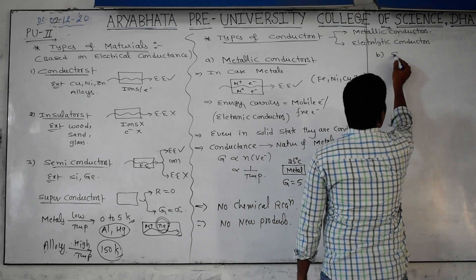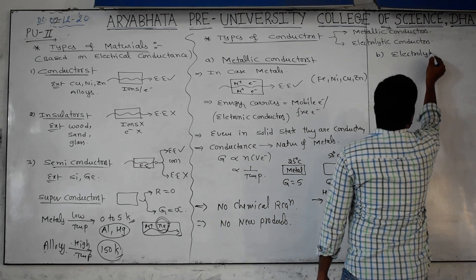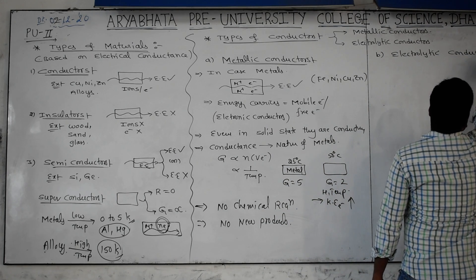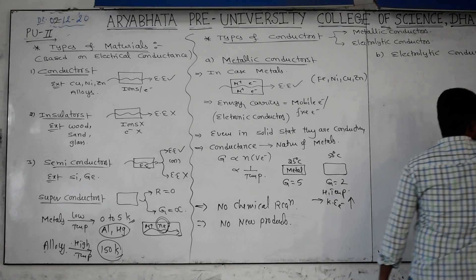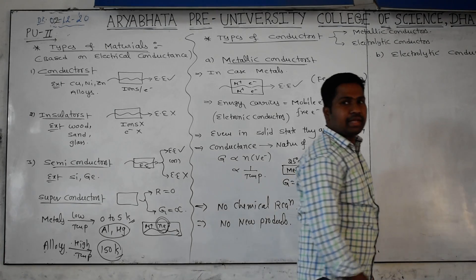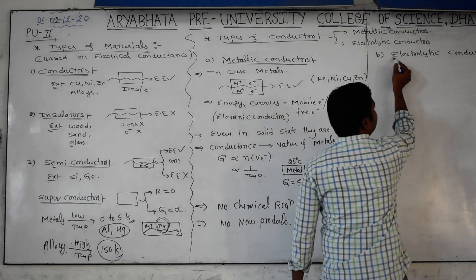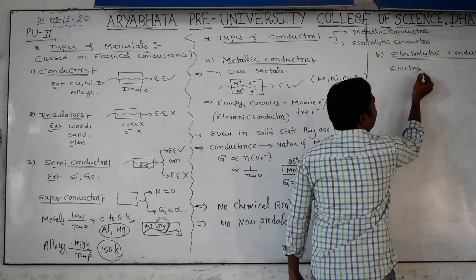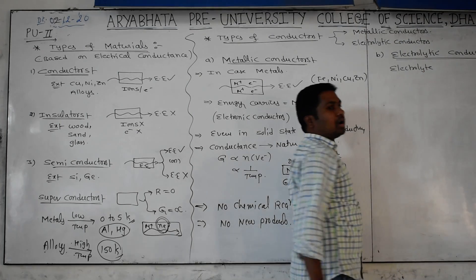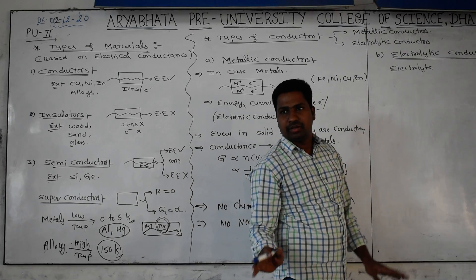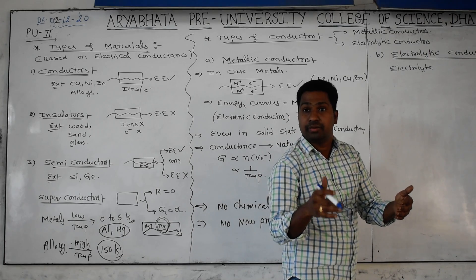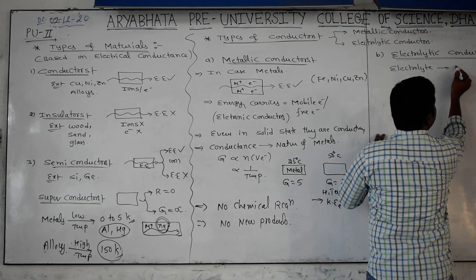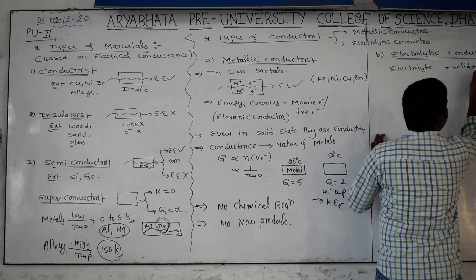Second type: electrolytic conductors. What is the meaning of electrolytic conductors? You take an electrolyte - it could be an acid, base, or salt - after dissolving, it should give ions. In solid state, an electrolyte acts as an insulator. For example, NaCl crystal in solid state is a bad conductor because in solid phase, ions are present but not moving - there is no transport.